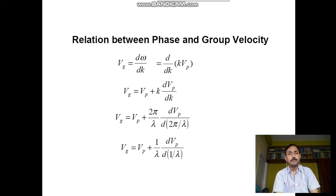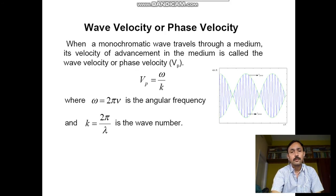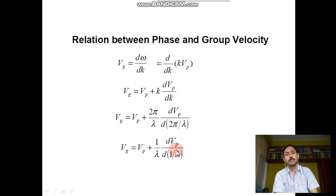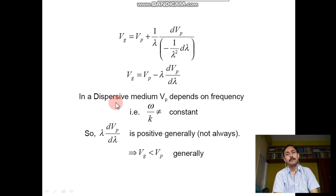Since vp = ω/k, we have ω = k·vp. Substituting into vg = dω/dk: vg = vp + k(dvp/dk). Since k = 2π/λ, substituting and simplifying: vg = vp + (1/λ)·(dvp/d(1/λ)), which after differentiation gives vg = vp − λ(dvp/dλ).